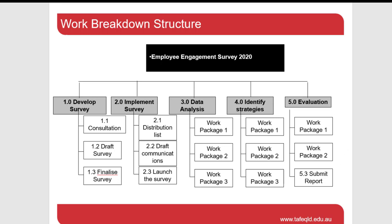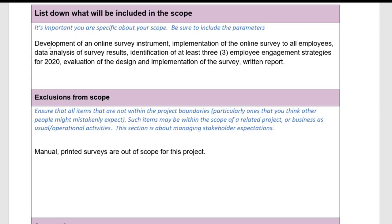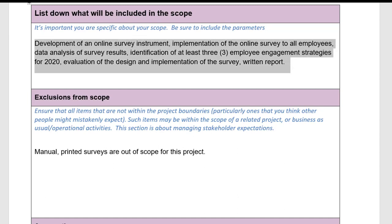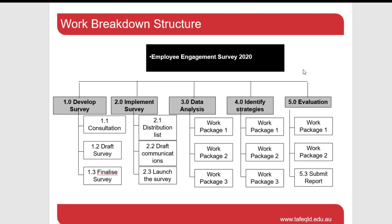The most important thing is that our key scope — the things we say we're going to do — are represented within this work breakdown structure. When you produce your WBS, make sure it's logically ordered for your project. This could be in terms of a process, which this example more or less is: first develop a survey, then implement it, then analyse the data, identify the strategies, and do the evaluation. So that follows a process.